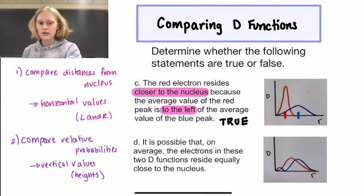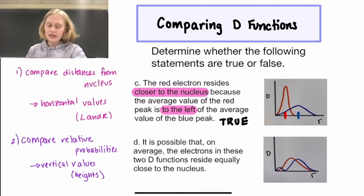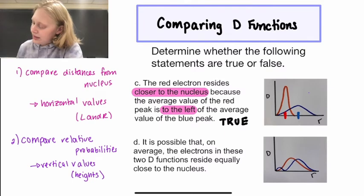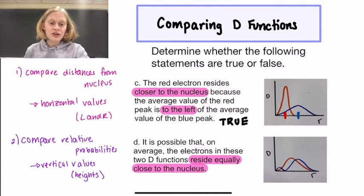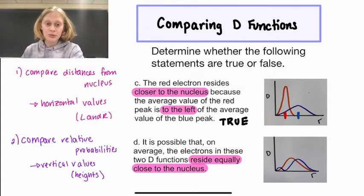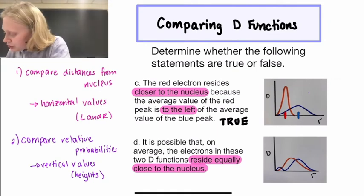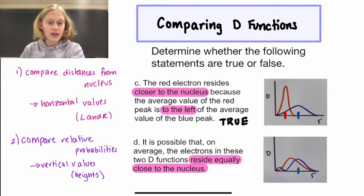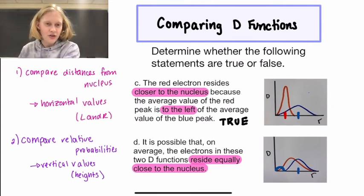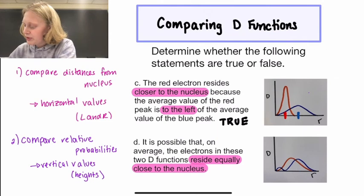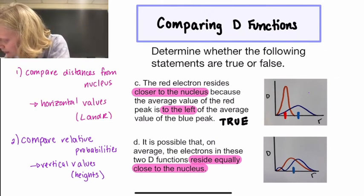Our last statement says it is possible that on average the electrons in these two d-functions reside equally close to the nucleus. This one is a little bit different — it's asking us to compare their average values. You might be tempted to put the average value of the blue function right under the highest point, but you have to take note of this little blue area over here. Because we have that area over there, it's going to shift the average value of the blue function to the left.